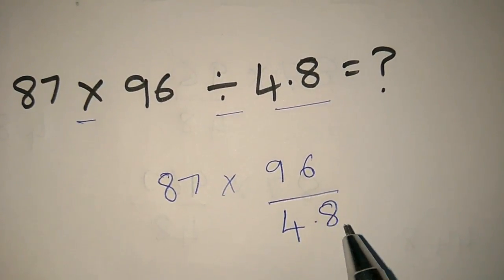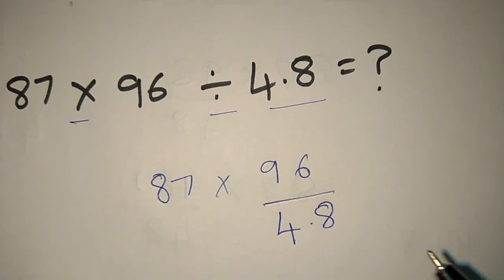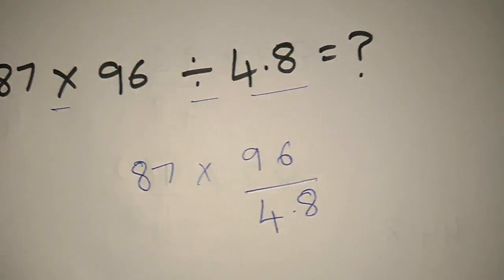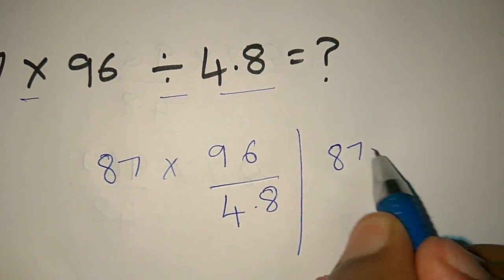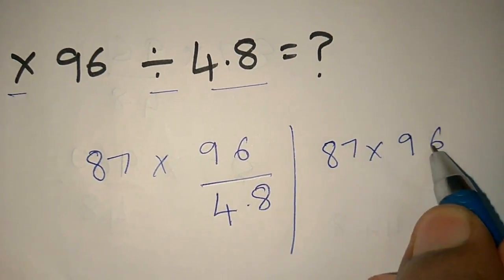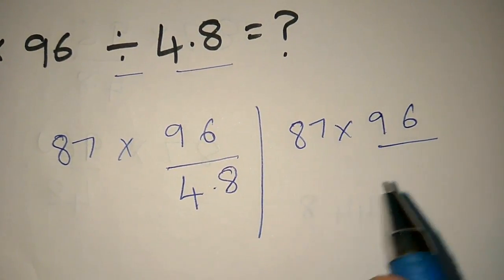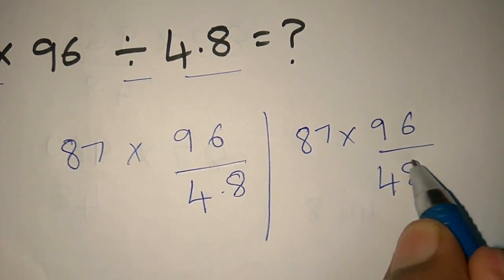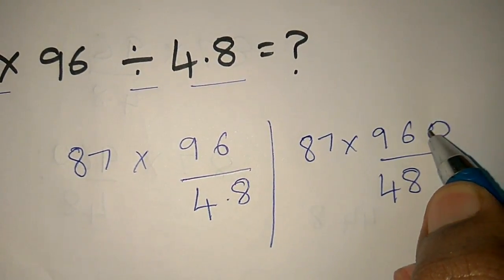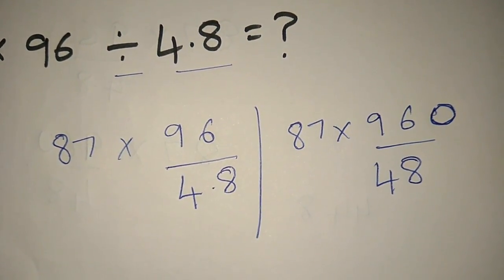Now let's try it. 87 times 96 divided by 4.8. We can cancel this. When 4.8, we can cancel the decimal values. We just remove the point, so we multiply by 10.